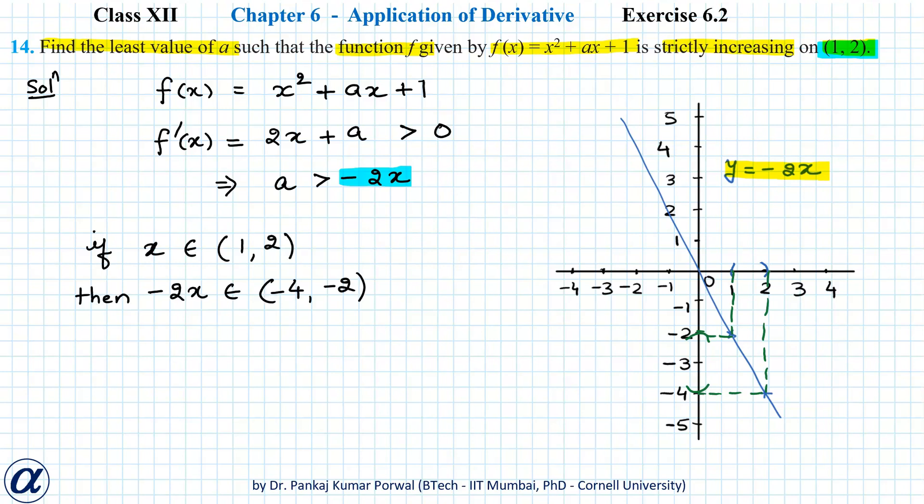Sometimes people have the tendency to write this as (-2, -4), but that will be wrong because the left-hand number in the interval should be the smaller number and the right-hand number should be the bigger number.